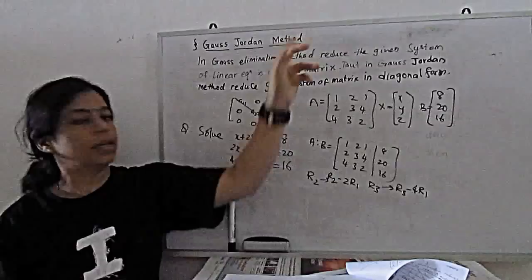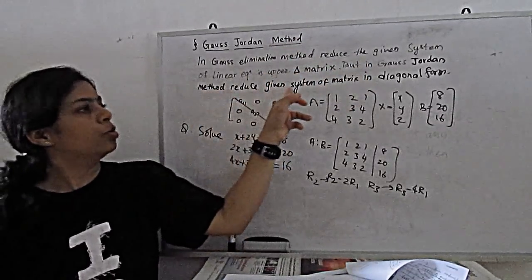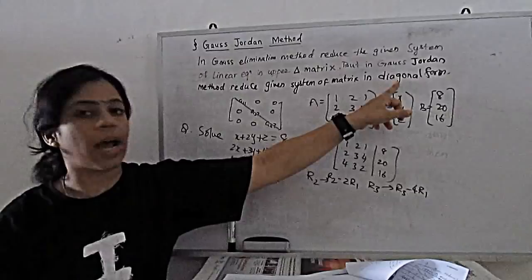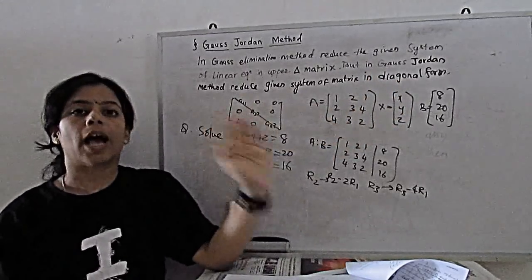But in Gauss-Jordan method, we reduce the given system of matrix to diagonal form. Means our matrix A is reduced to diagonal form.